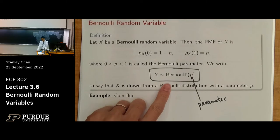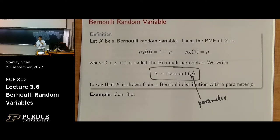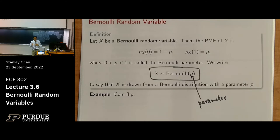Most of the random variables we study are a parametric family — meaning there is a parameter. For Bernoulli, the parameter is p. If I tell you p and tell you it is a Bernoulli random variable, you know the PMF and everything about it. Some random variables, like a normal distribution, have two parameters: the mean and the standard deviation. You need two parameters to specify that distribution. So they are parameterized by a few number of parameters.